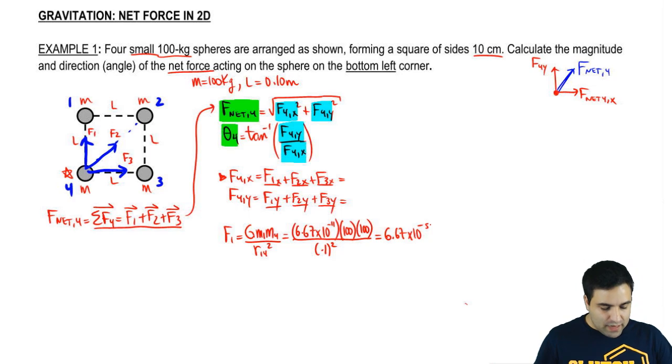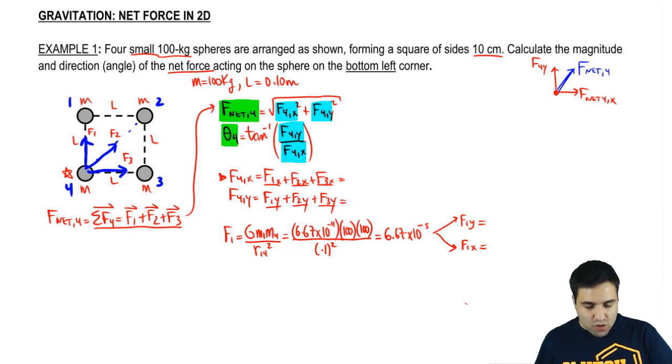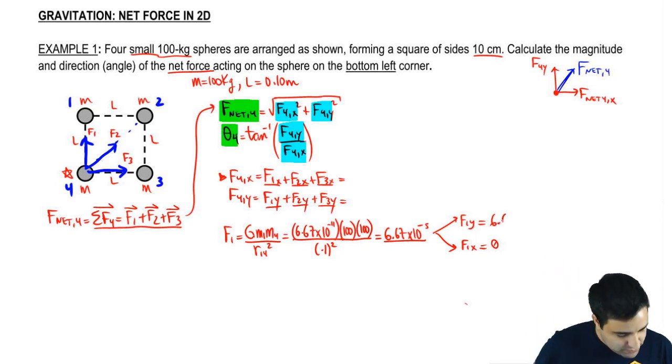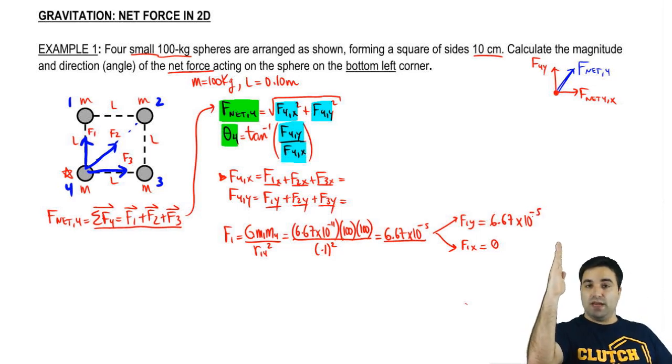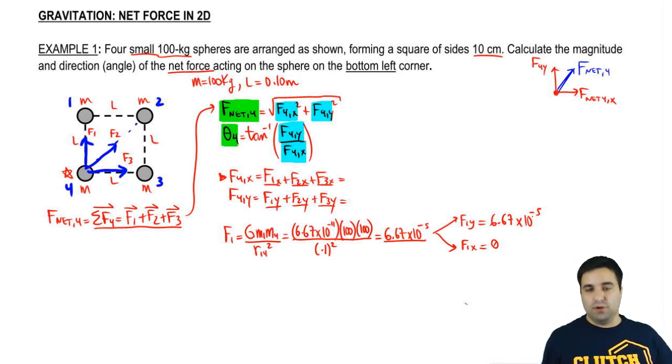So now what I need to do is I need to split this into F1Y and F1X. But if you look at F1, F1 is going straight in the Y-axis, which means F1X is 0, and F1Y is just the whole number. So when I found F1, it was actually the same thing as my F1Y, so it's 6.67 times 10 to the negative 5th.